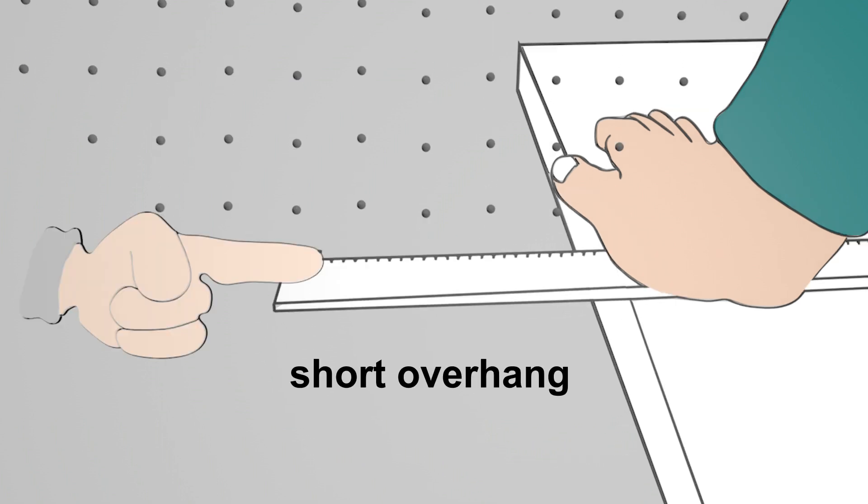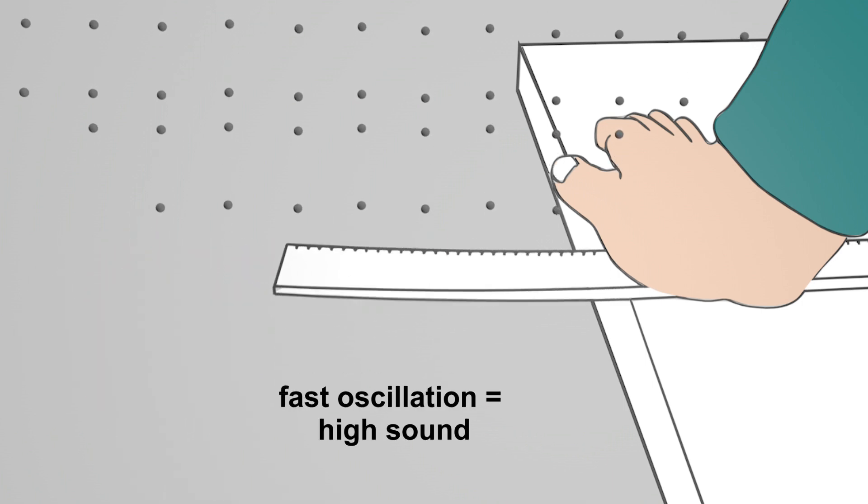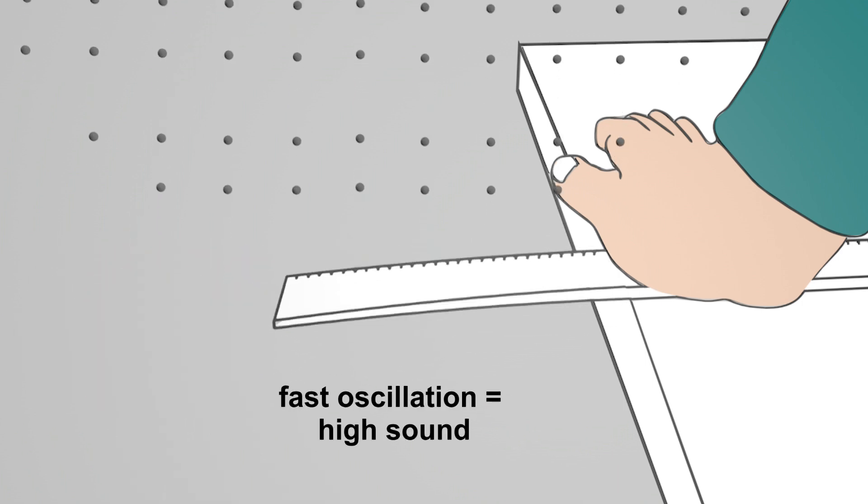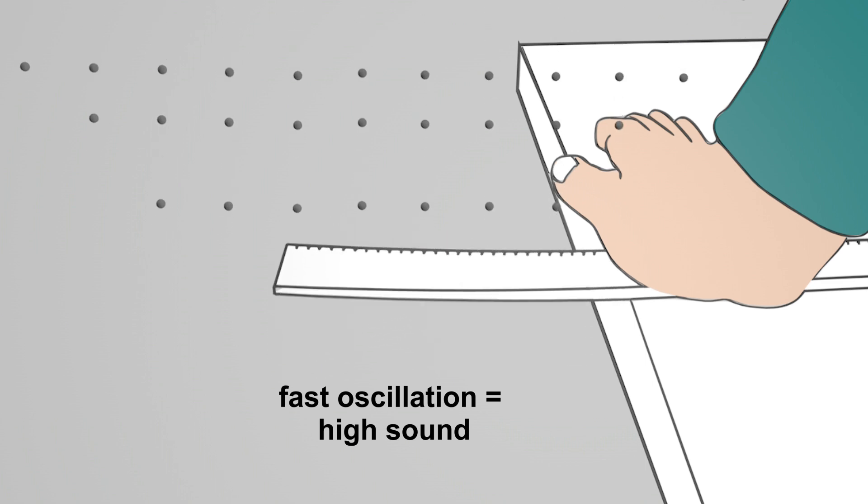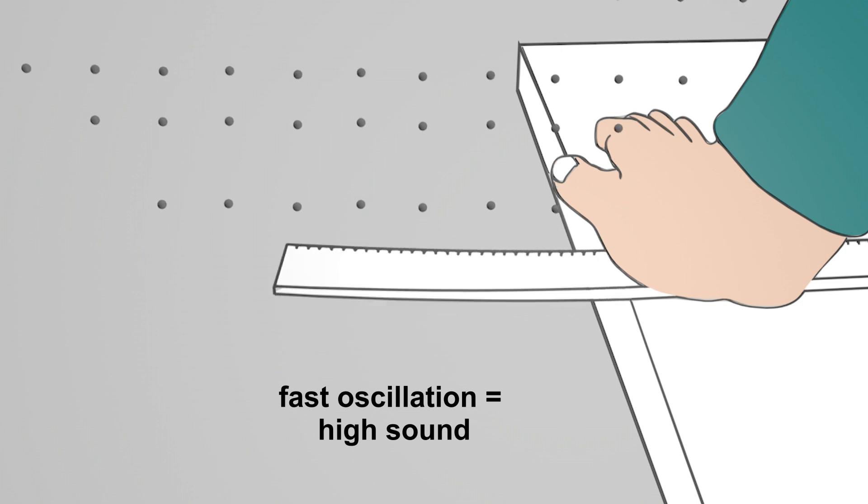Now you put the ruler on the table so that only one short piece protrudes. If you deflect the ruler, the ruler swings back and forth relatively quickly and quickly hits the surrounding air particles. These relatively fast oscillations are also transmitted to our eardrum and we hear a high sound.